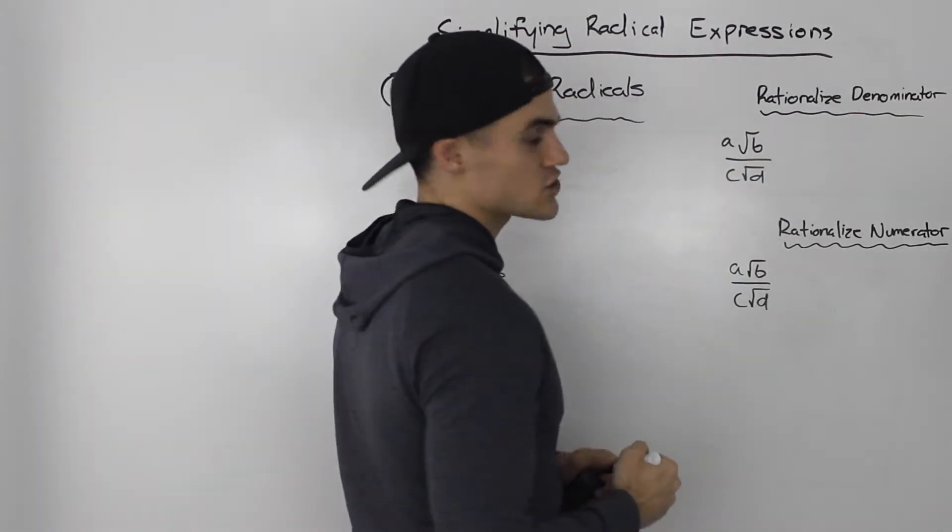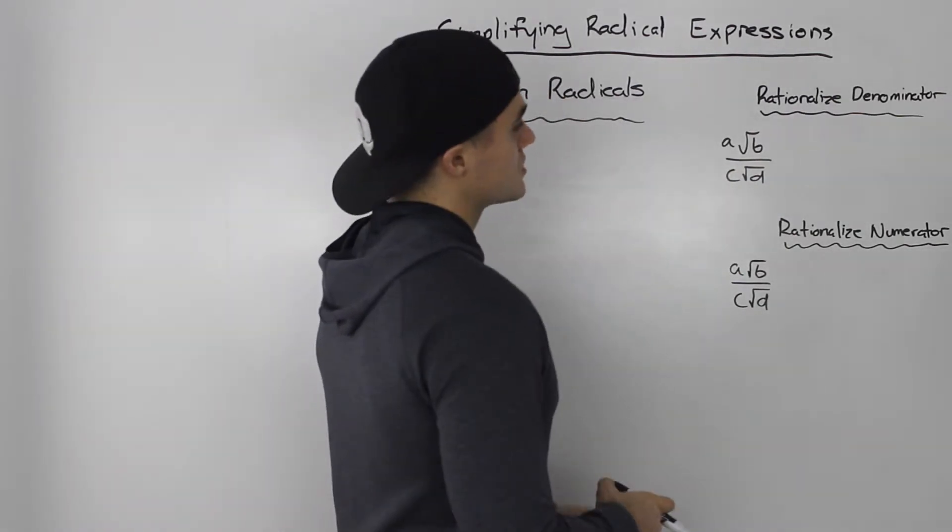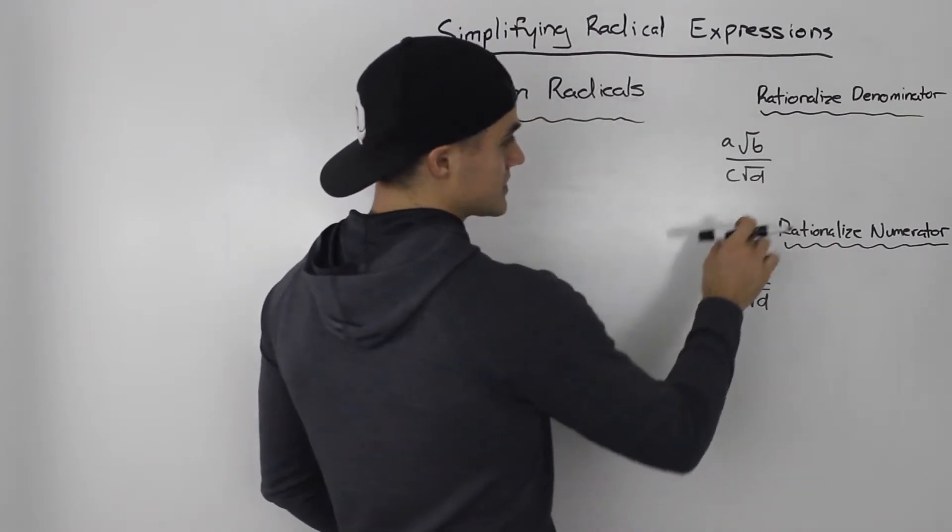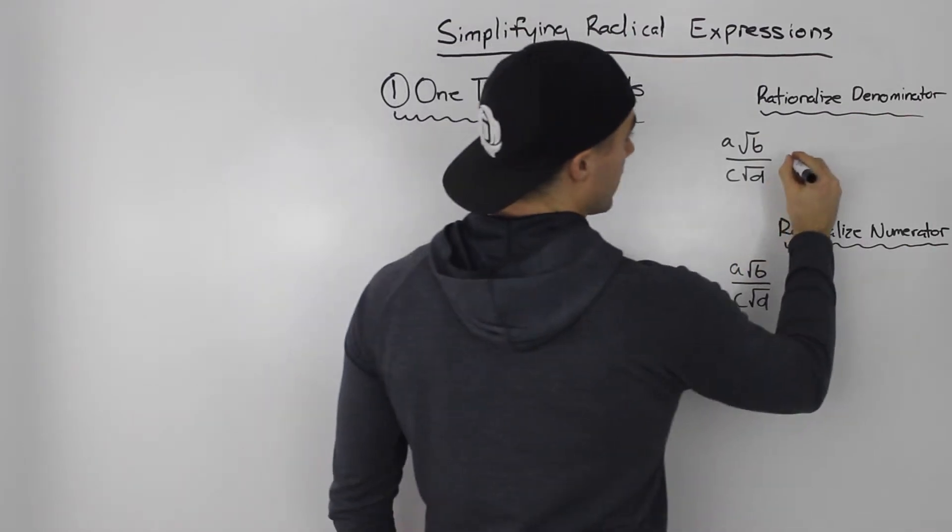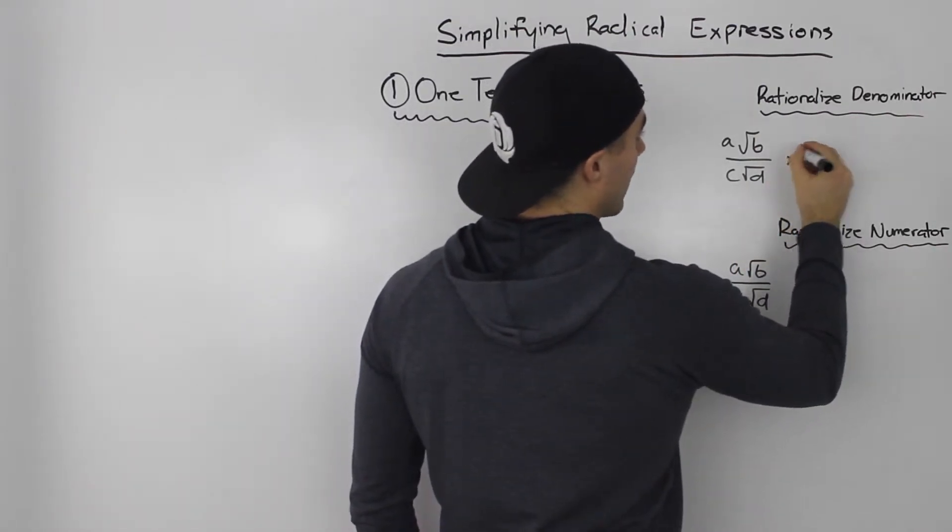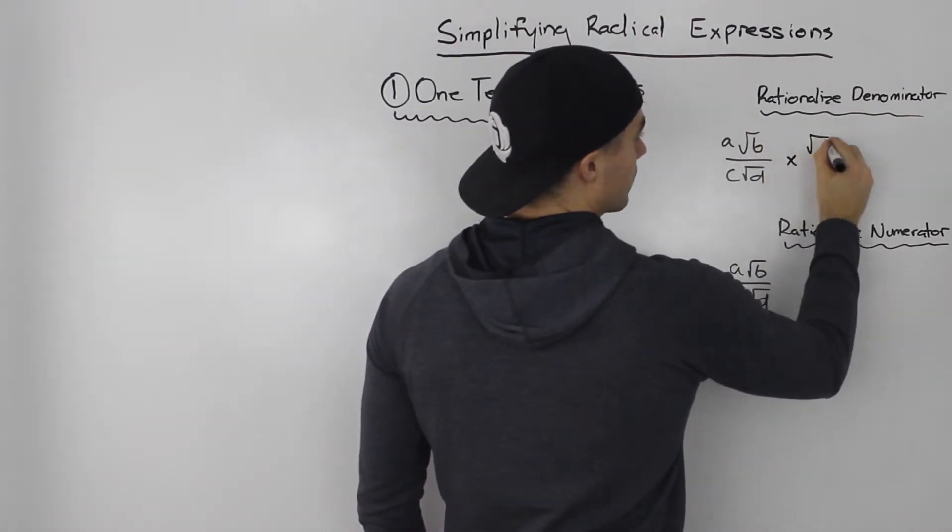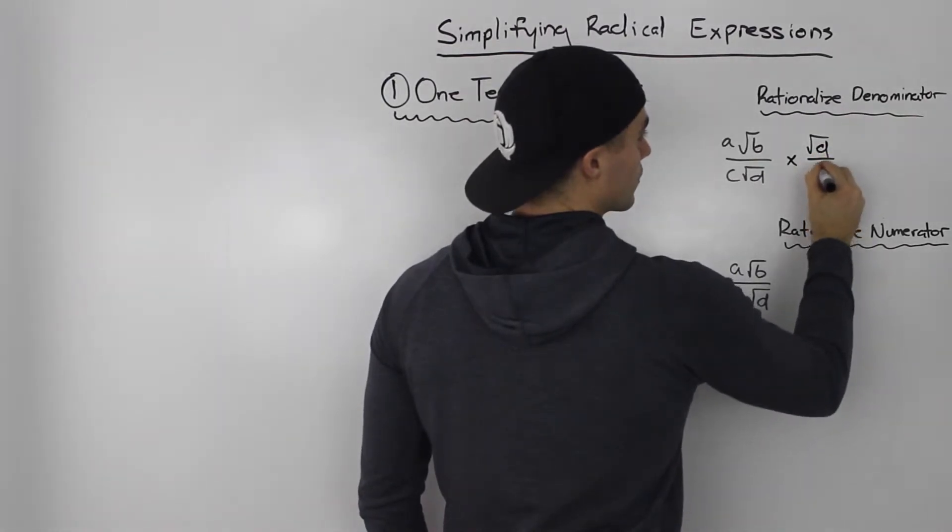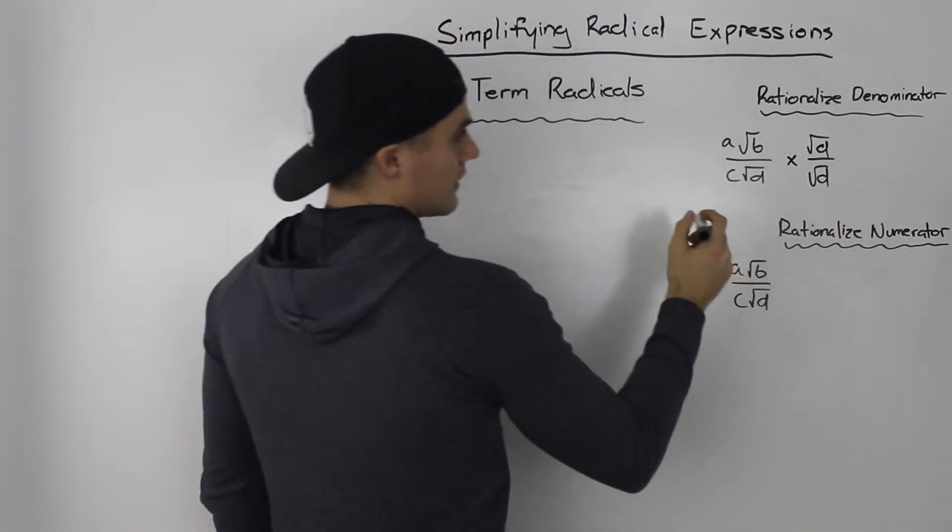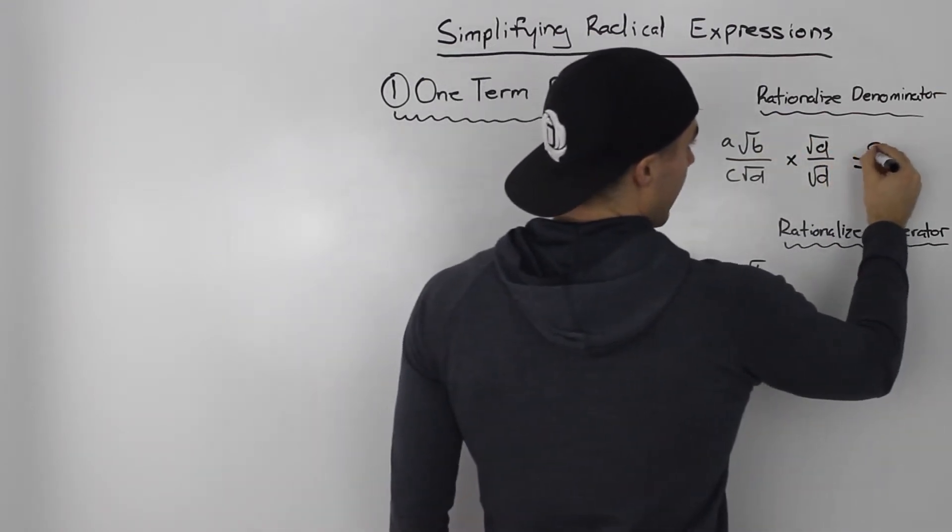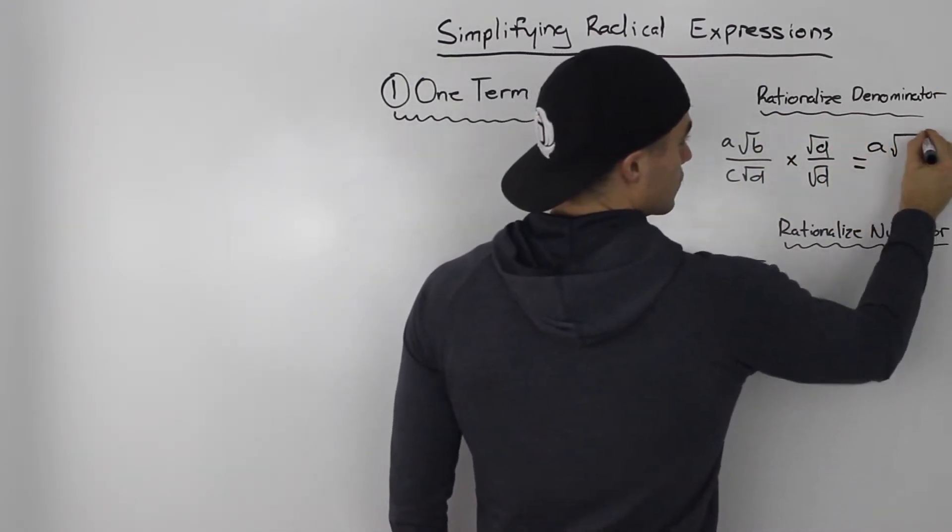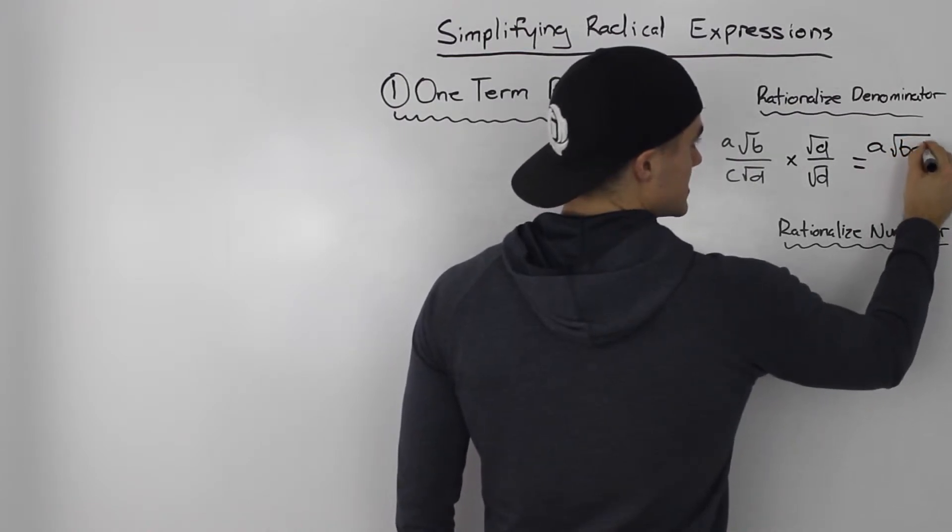Let's say we want to rationalize the denominator. What that means is that we want to get rid of this root D in the denominator. The way we would do that is we would just multiply this expression by root D over root D. When we multiply the numerator out, we'll get A root B times root D is the square root of B times D.